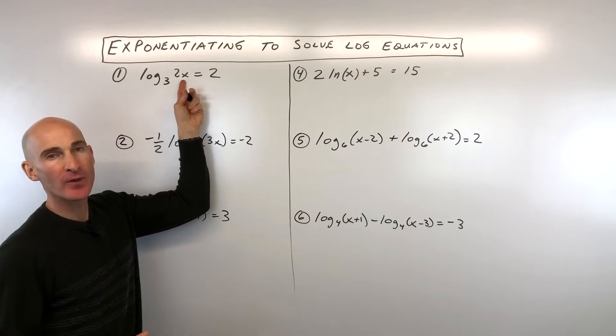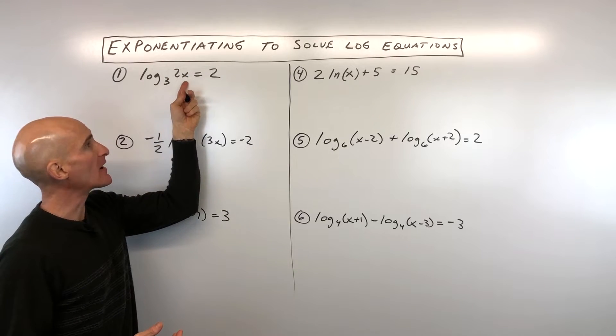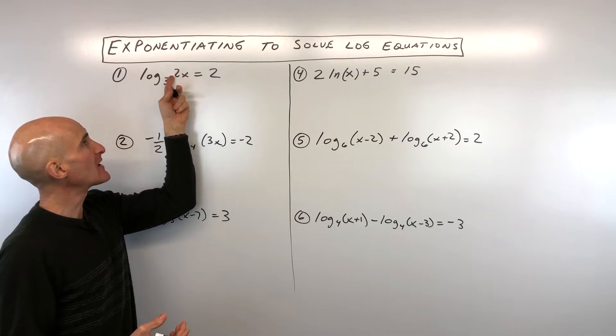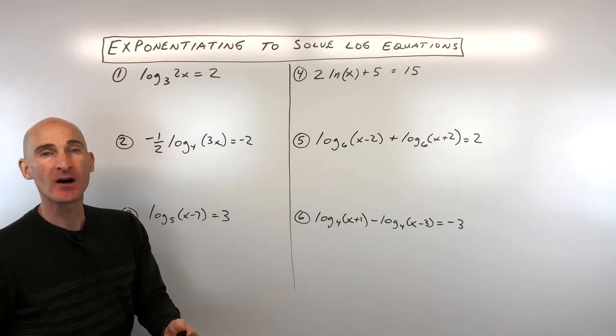You're trying to get that variable by itself. So we've got log base 3 of 2x equals 2. And what we want to do is we want to get rid of this log because we want to get this argument by itself, the 2x.